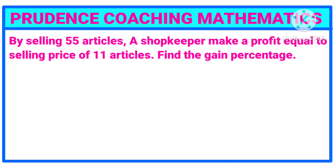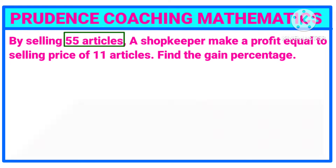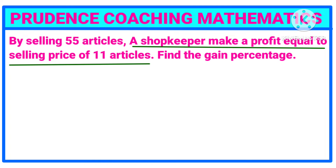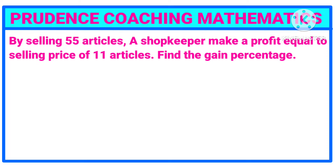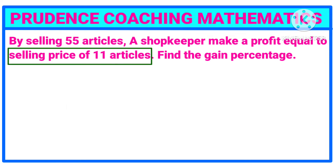The question is: by selling 55 articles, a shopkeeper makes a profit equal to the selling price of 11 articles. Here the selling price is not given separately, and the profit is also not given in rupees — it is said that the profit is equal to the selling price of 11 articles.